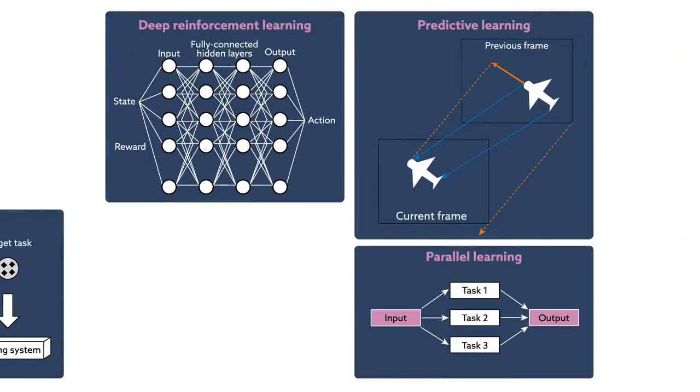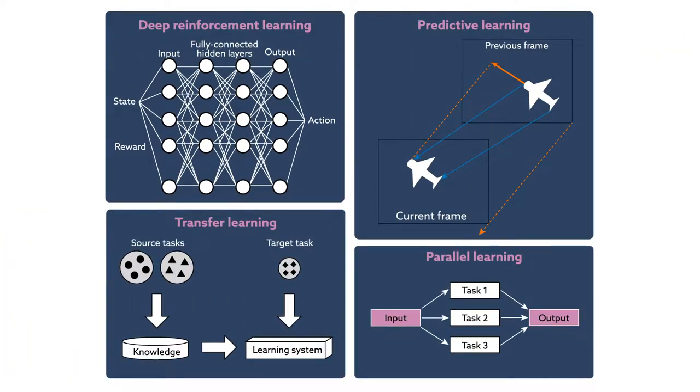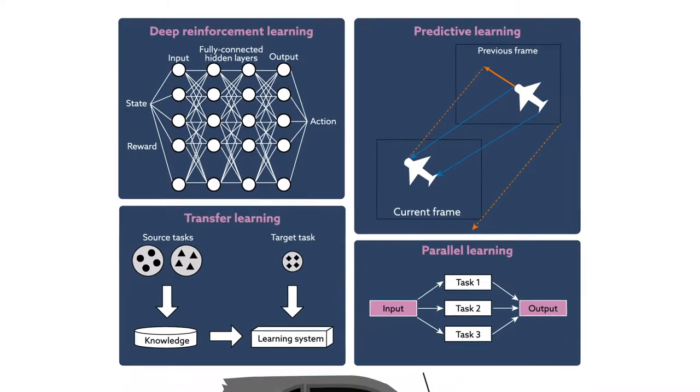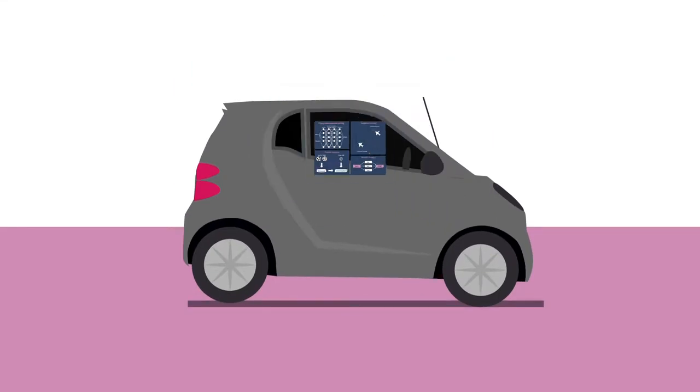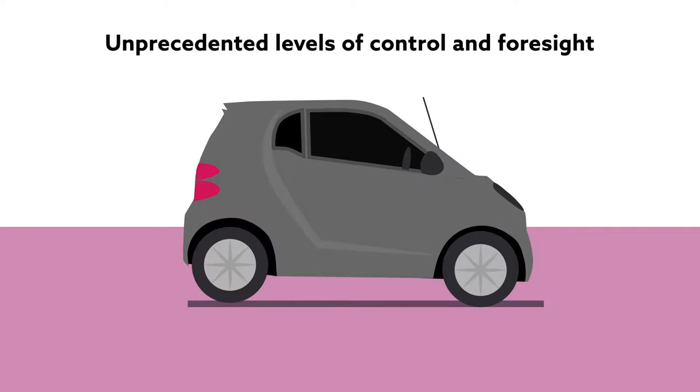Researchers from China have pulled together some of the most powerful techniques in machine learning to create the ultimate control system. Successfully deployed in AI-regulated hybrid electric vehicles, the framework could grant other autonomous systems unprecedented levels of control and foresight.